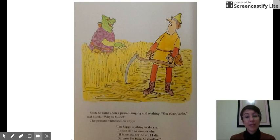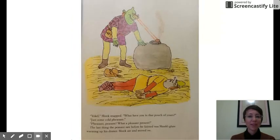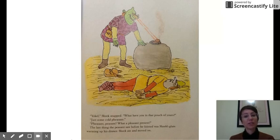Soon he came upon a peasant singing and scything. 'You there, varlet,' said Shrek. 'Why so blithe?' The peasant mumbled this reply: 'I'm happy scything in the rye. I never stop to wonder why. I hone and scythe until I die, but now I'm busy, so goodbye.' 'Yokel,' Shrek snapped. 'What have you in that pouch of yours?' 'Just some cold pheasant.' 'Pheasant, peasant — what a pleasant present.' The last thing the peasant saw before he fainted was Shrek's glare warming up his dinner. Shrek ate and moved on.